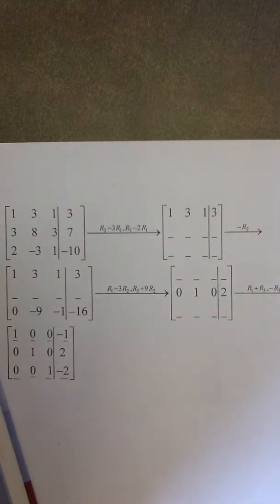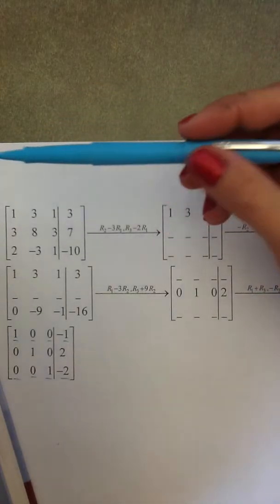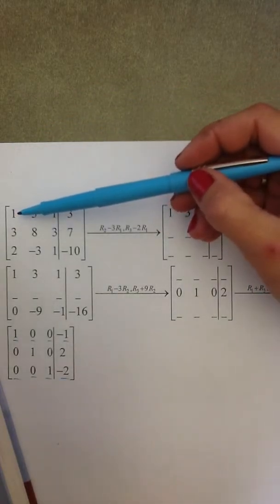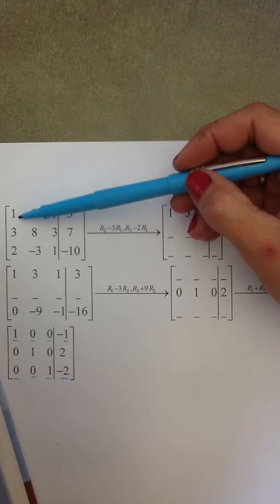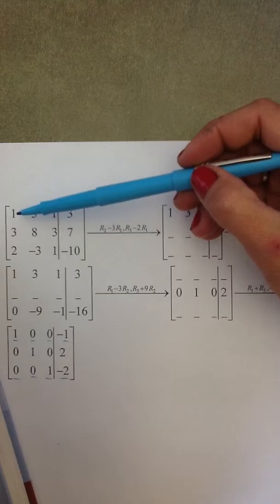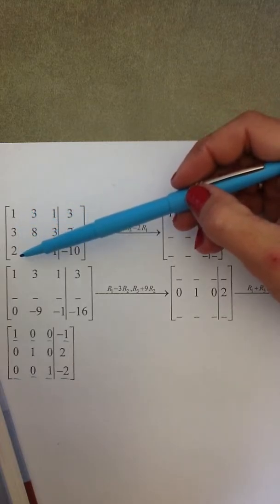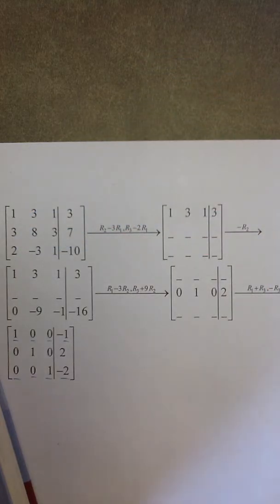The first step in Gauss-Jordan elimination is to start at row one, column one, and make that entry into a one. We already have a one there, so that's fantastic. Now we need to change the rest of the values in that column into zeros.